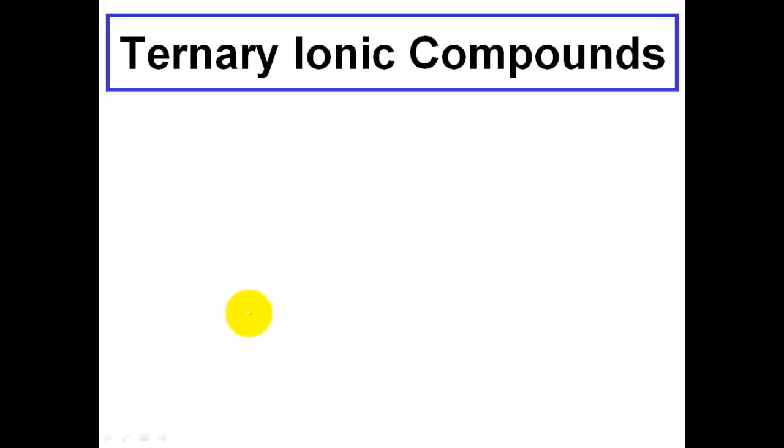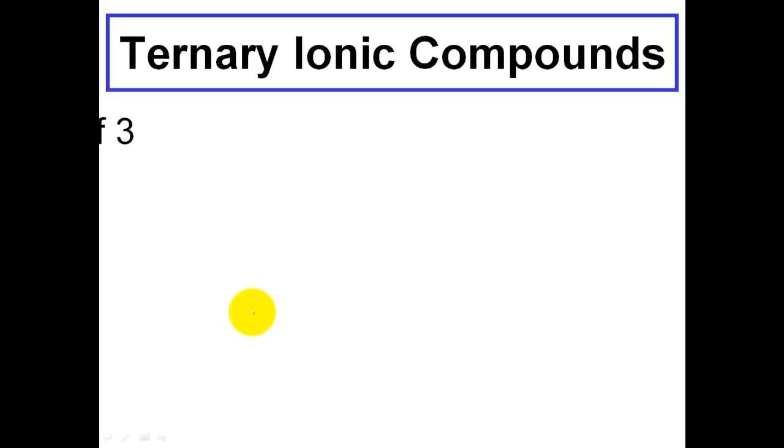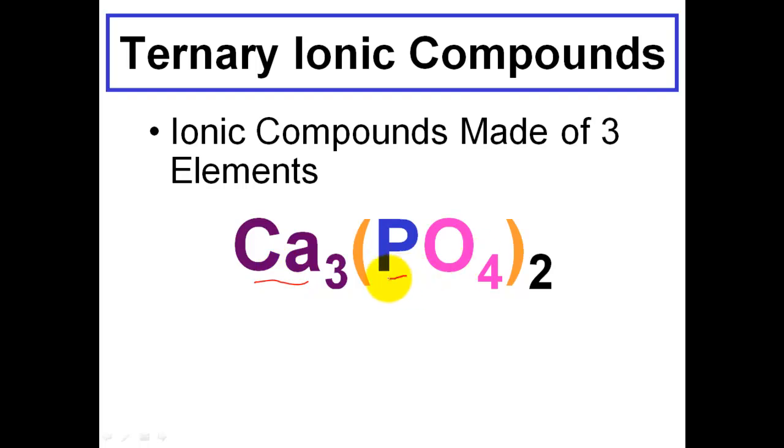This leads us to the next topic, ternary ionic compound. A ternary ionic compound is simply an ionic compound that is made up of three elements. Here's our three elements. We have calcium, phosphorus, and oxygen. Calcium is the first element, phosphorus is the second element, and oxygen is the third element. So I have an ionic compound made of three different elements.